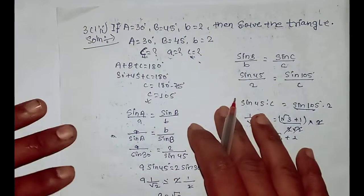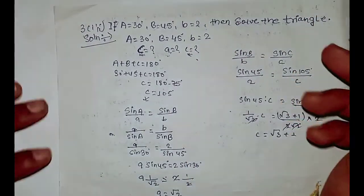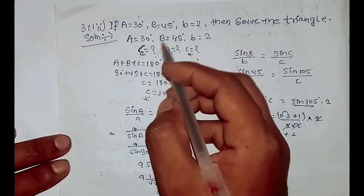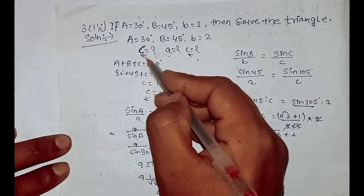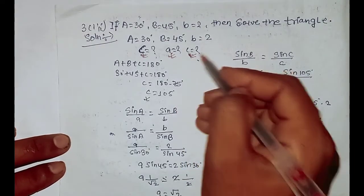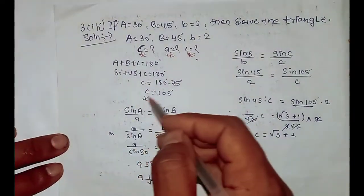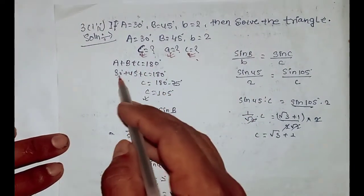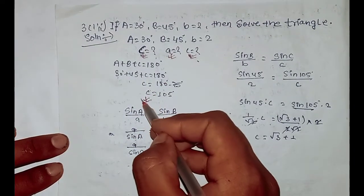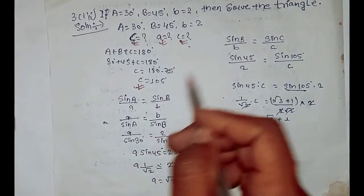Third problem: if A equals 30 degrees, B equals 45 degrees, and b equals 2, then solve the triangle. Using A plus B plus C equals 180 degrees: 30 plus 45 plus C equals 180, so C equals 105 degrees. Using the sine rule: sin A divided by a equals sin B over b.